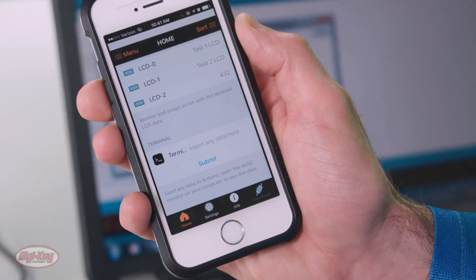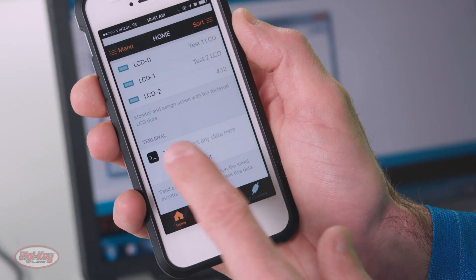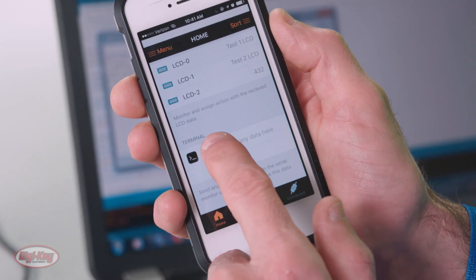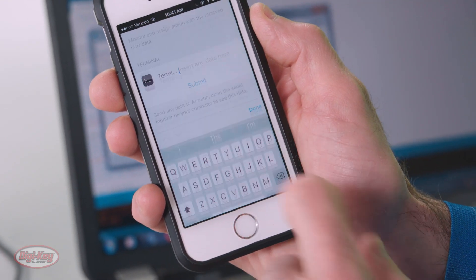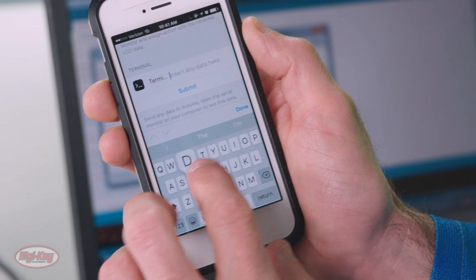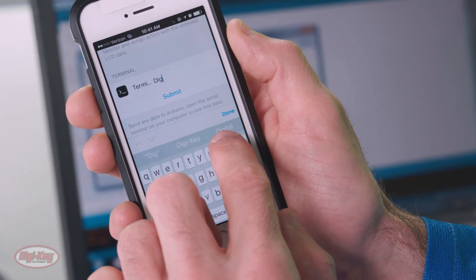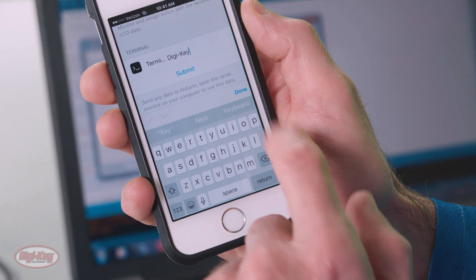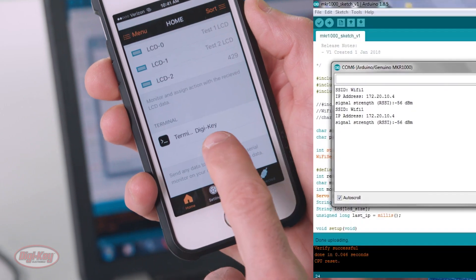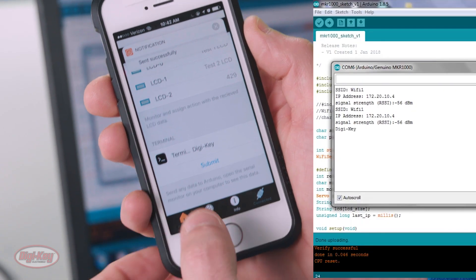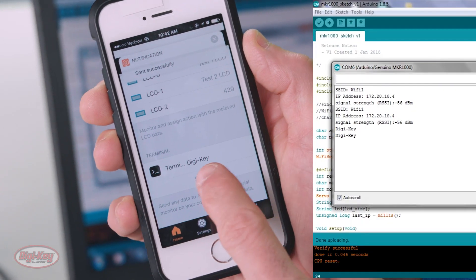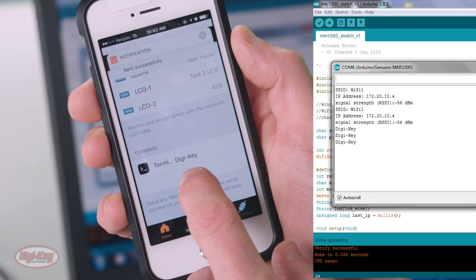So what I can do here is I'm going to type in Digi-Key and done, and then submit. And if we look on the monitor, we can see Digi-Key being displayed.